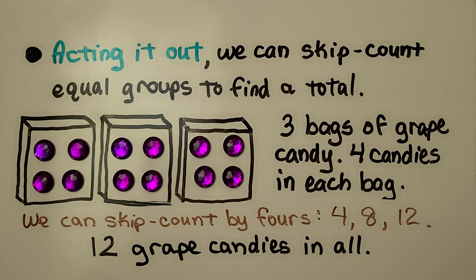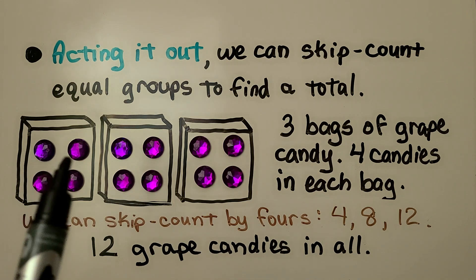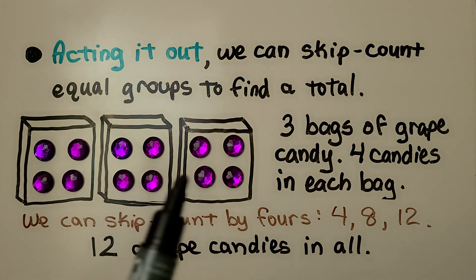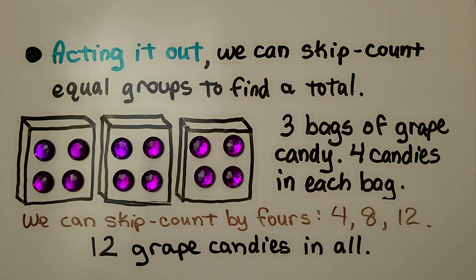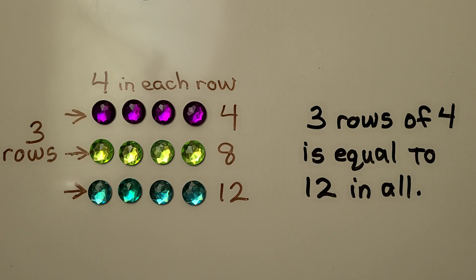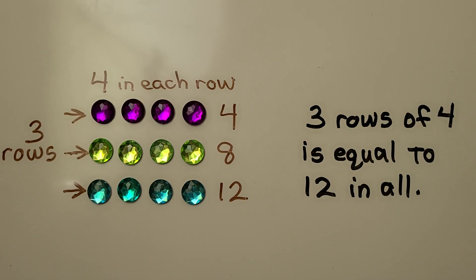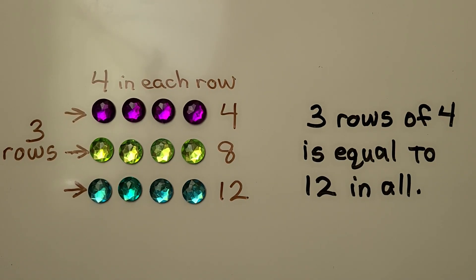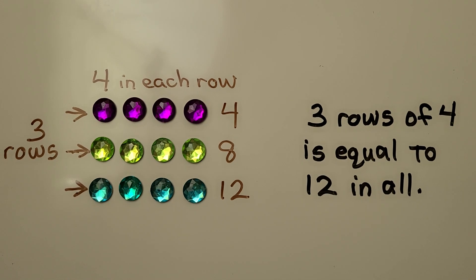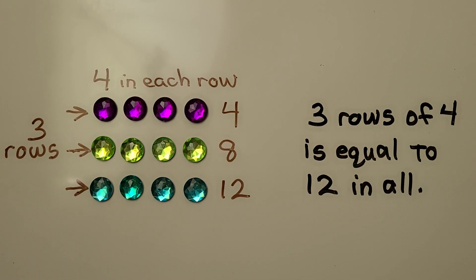We have three bags of grape candy with four candies in each bag. We can skip count by fours: four, eight, twelve. There are twelve grape candies in all. If we have three rows of four, it's equal to twelve in all.